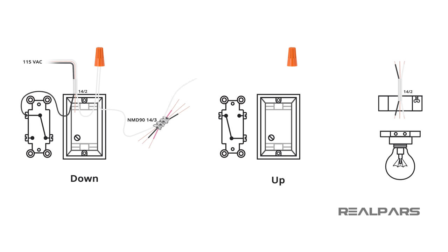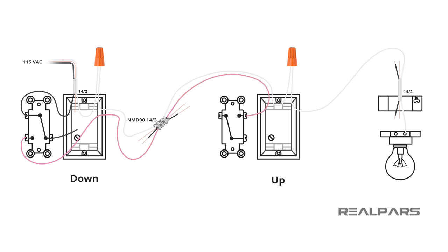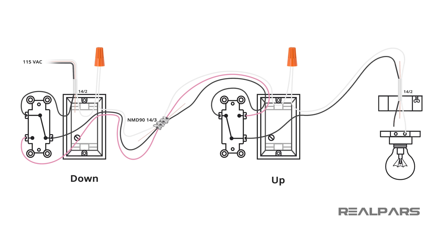There is another wire connector securing the 14-3 white wire to the 14-2 white wire of the light cable. This wire connection is completed inside the up switch electrical box. The 14-3 cable connects the two switches. The red wire connects the switches' normally open terminals, and the black wire connects the normally closed terminals. Finally, the black wire of the light electrical box connects to the up switch common terminal.